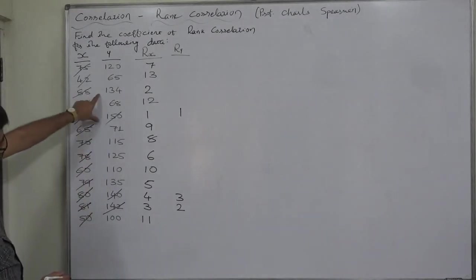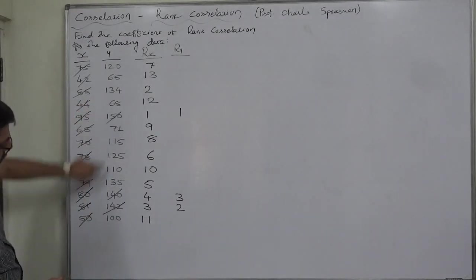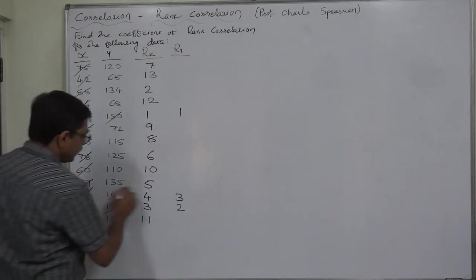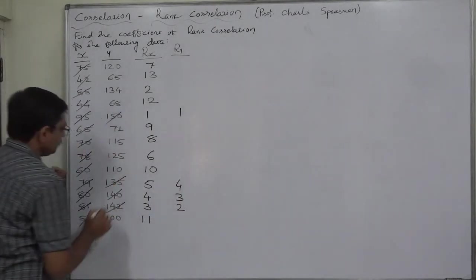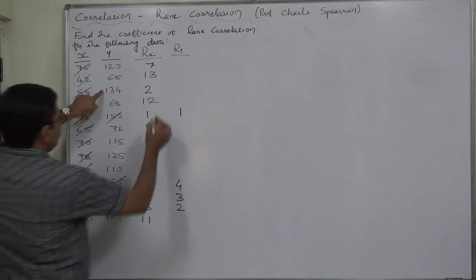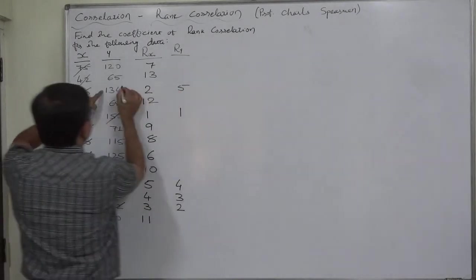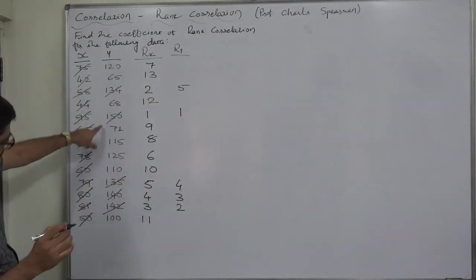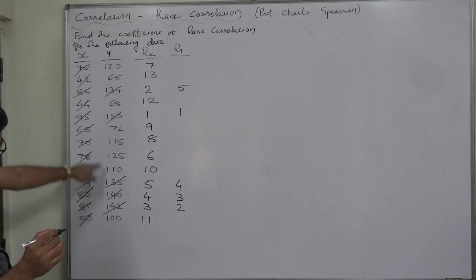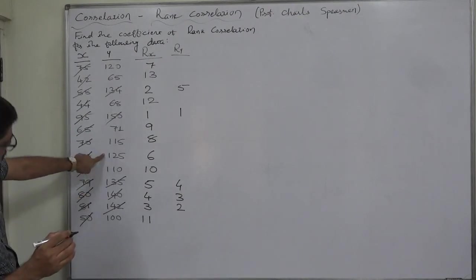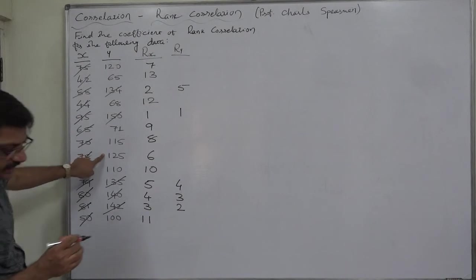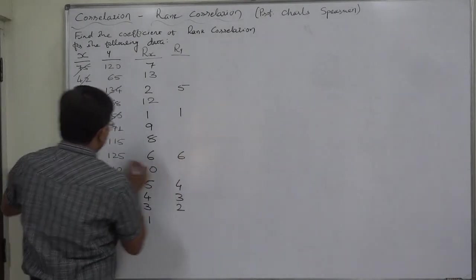139, 138, 137, 136 are not there. So, 135 will be assigned rank 4. 134 will be assigned rank 5, 134 and then no in 130s. So, 125 is there. It will be assigned rank 6, 125.